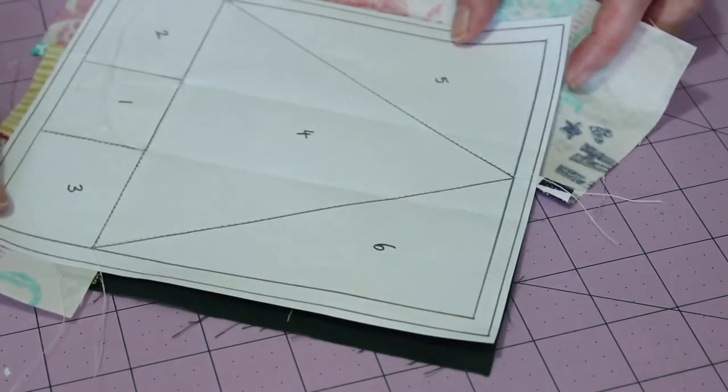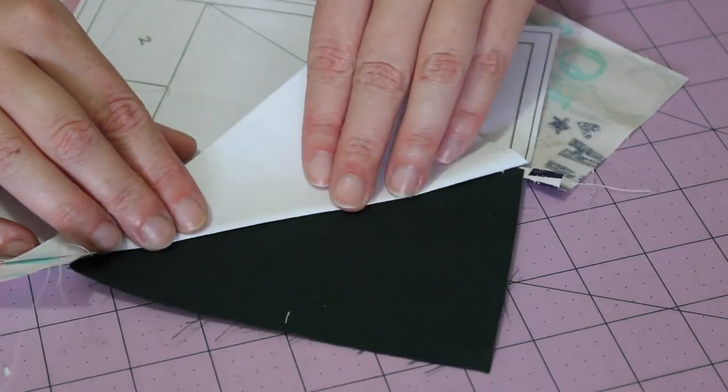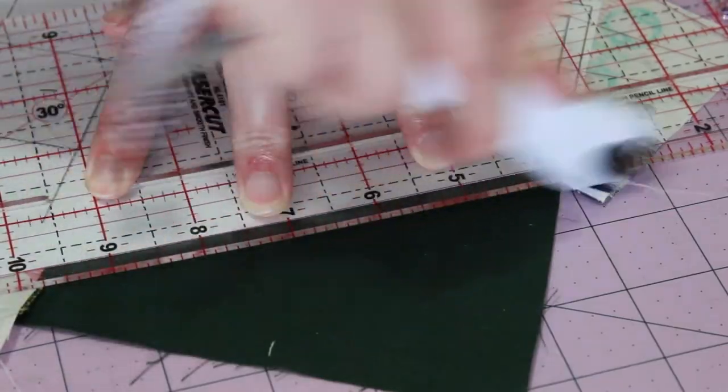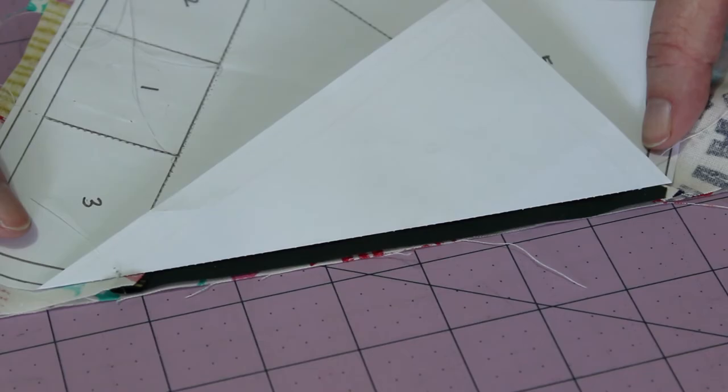Repeat exactly the same method from section five with section six, remembering to trim the edge to a quarter inch seam allowance. Aligning the fabrics into their correct places and pinning them in place.